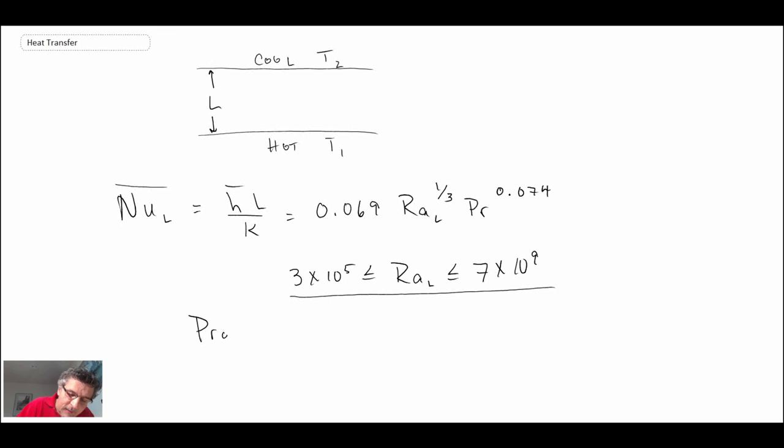In this, the properties are evaluated at the average temperature—either T-bar or T-average—that's defined as being (T1 + T2) divided by 2. So that's a correlation for the case of a horizontal enclosed space with the bottom hot and the top cool.